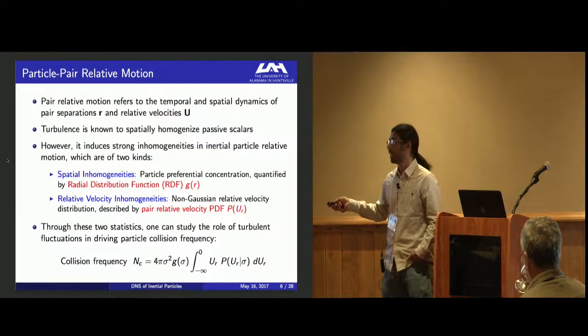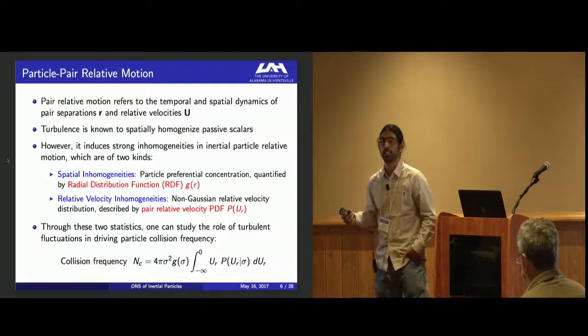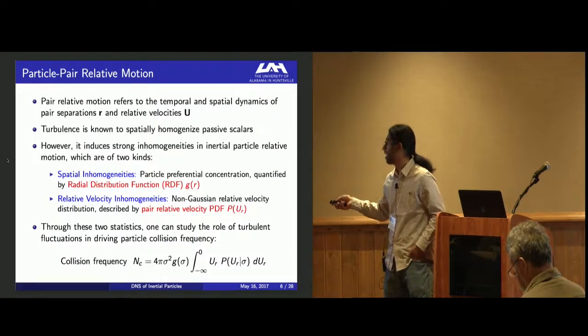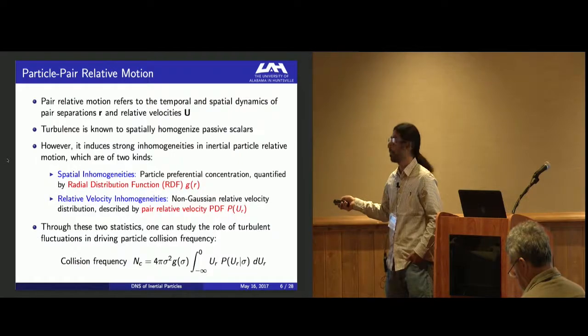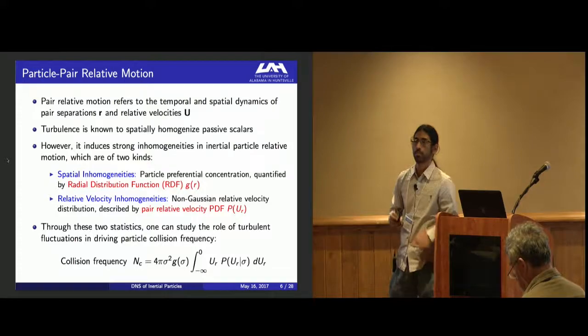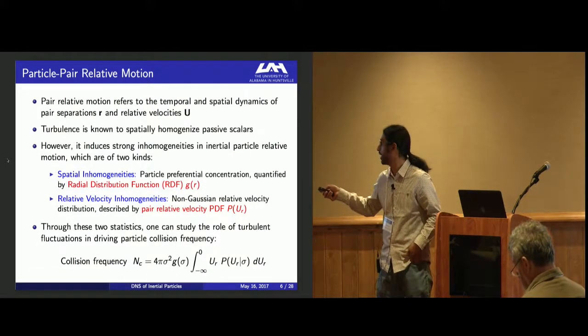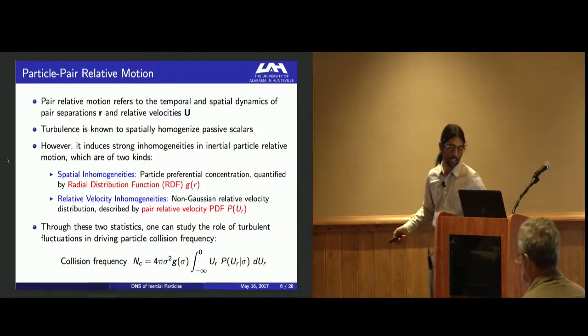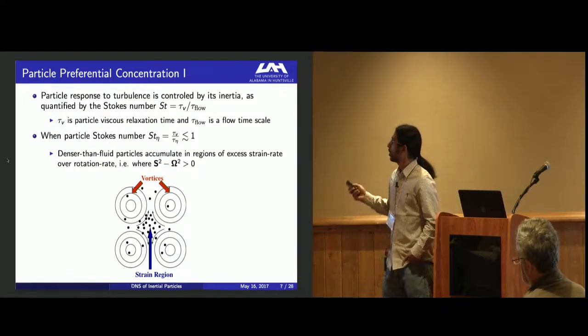Through these two statistics, one can study the role of turbulent fluctuations in driving particle collision frequency. Here the collision kernel is given by this expression, where sigma is the sum of the radii of particles when they are in contact, U of R is the relative velocity in the direction of R, and G of sigma is the radial distribution function. You can calculate the collision frequency using that expression.